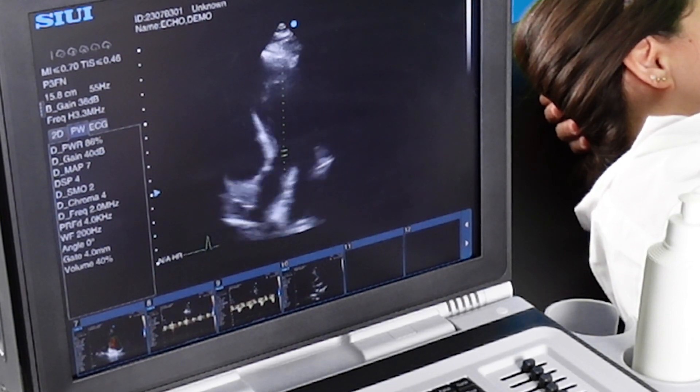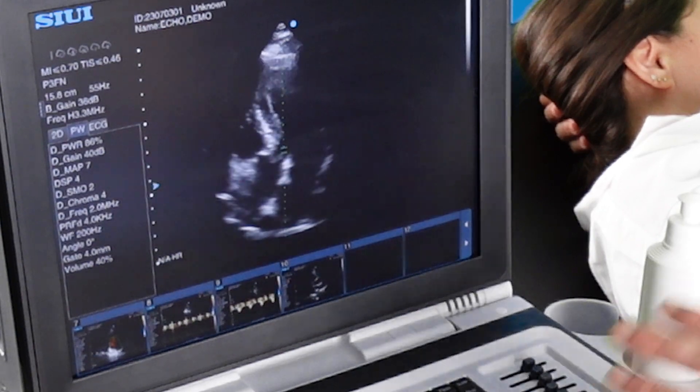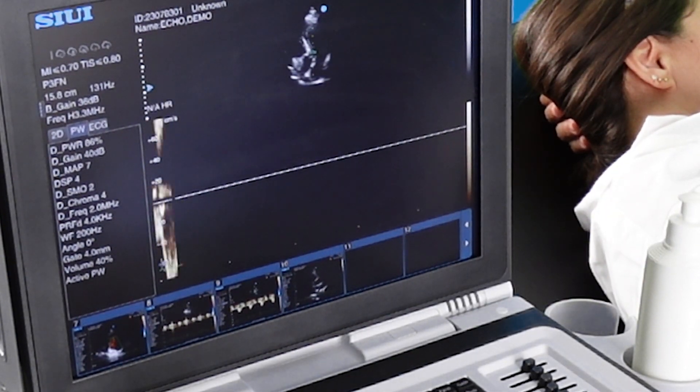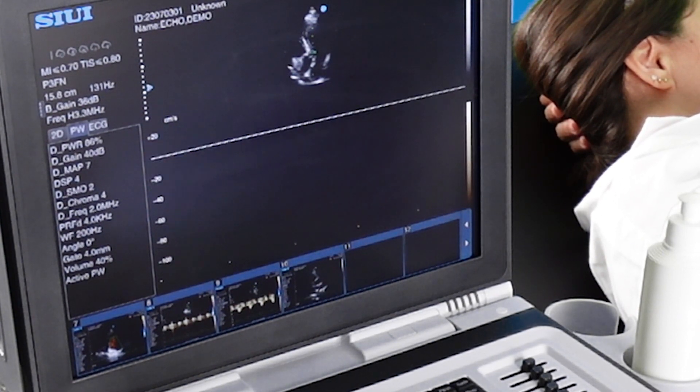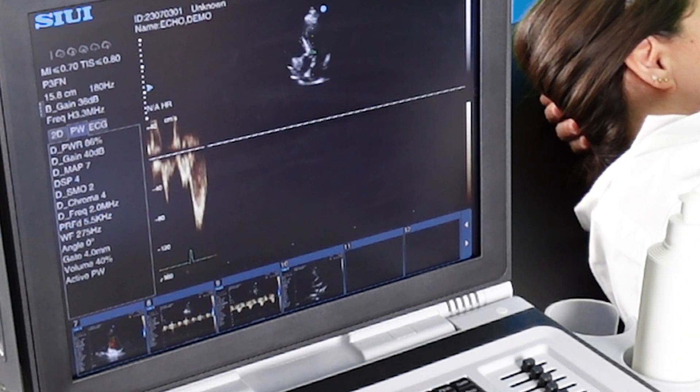With pulse wave Doppler just before the valve, it allows us to compare velocities right before and through the aortic valve. Bring our baseline up. Make sure the scale is adjusted so all of the waveform fits within the area.